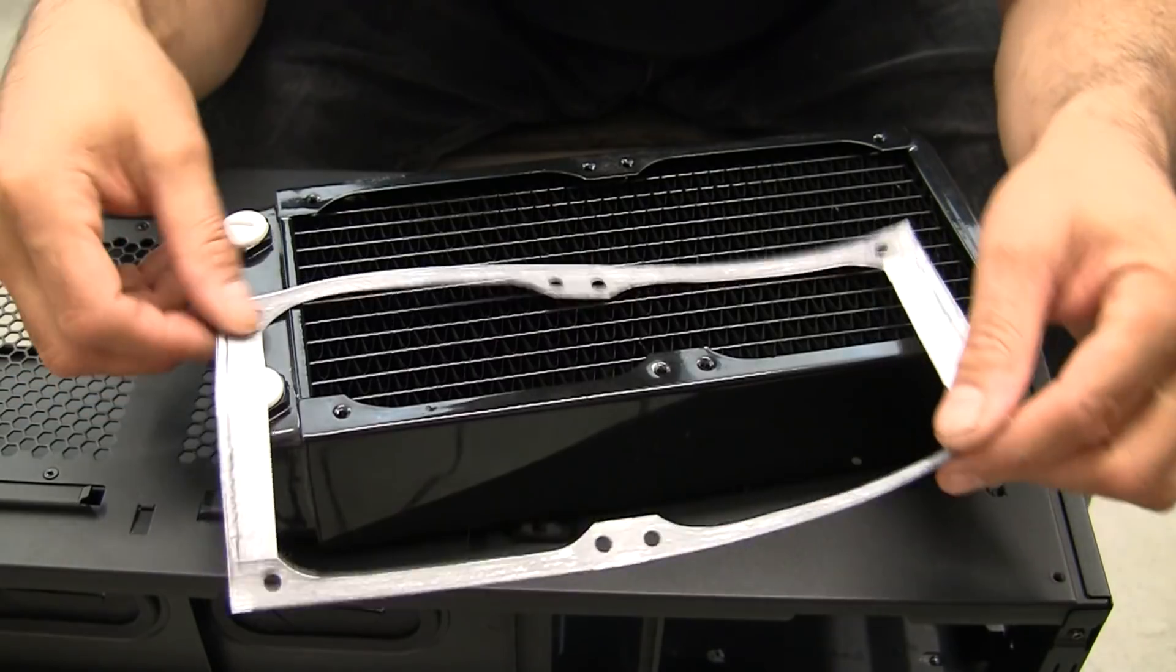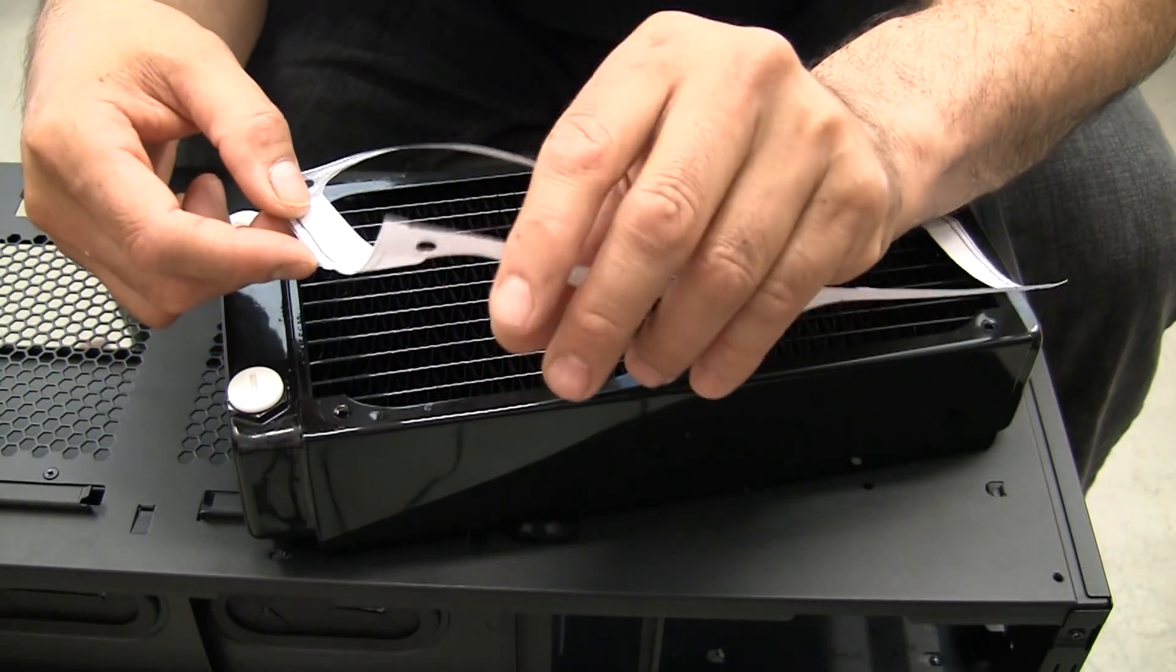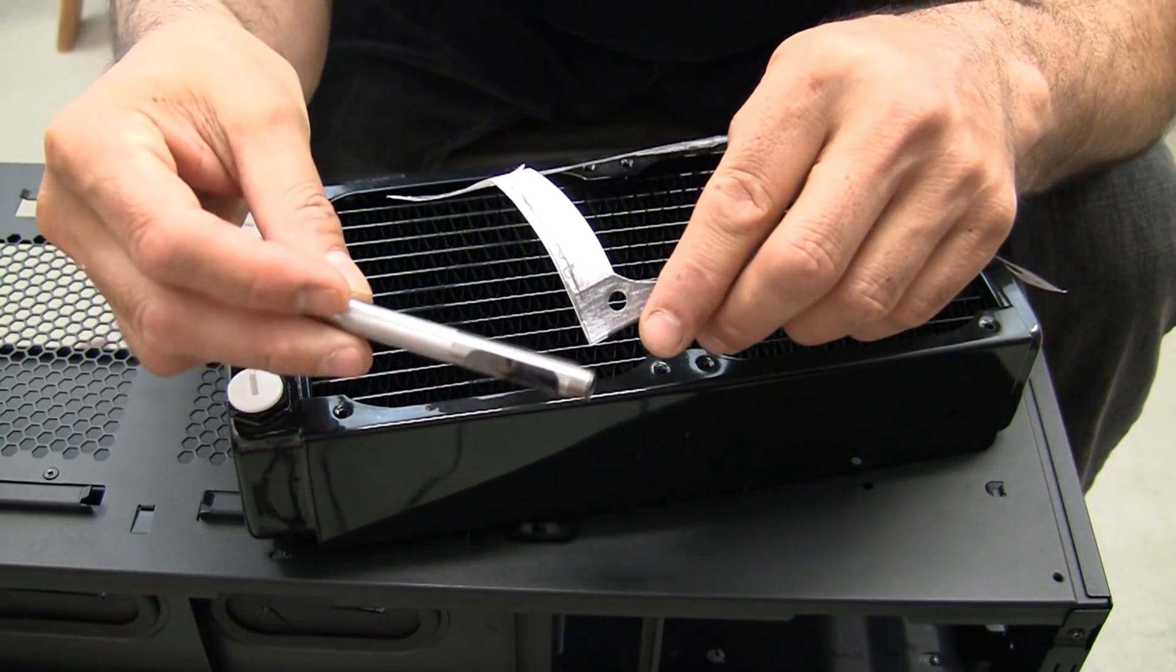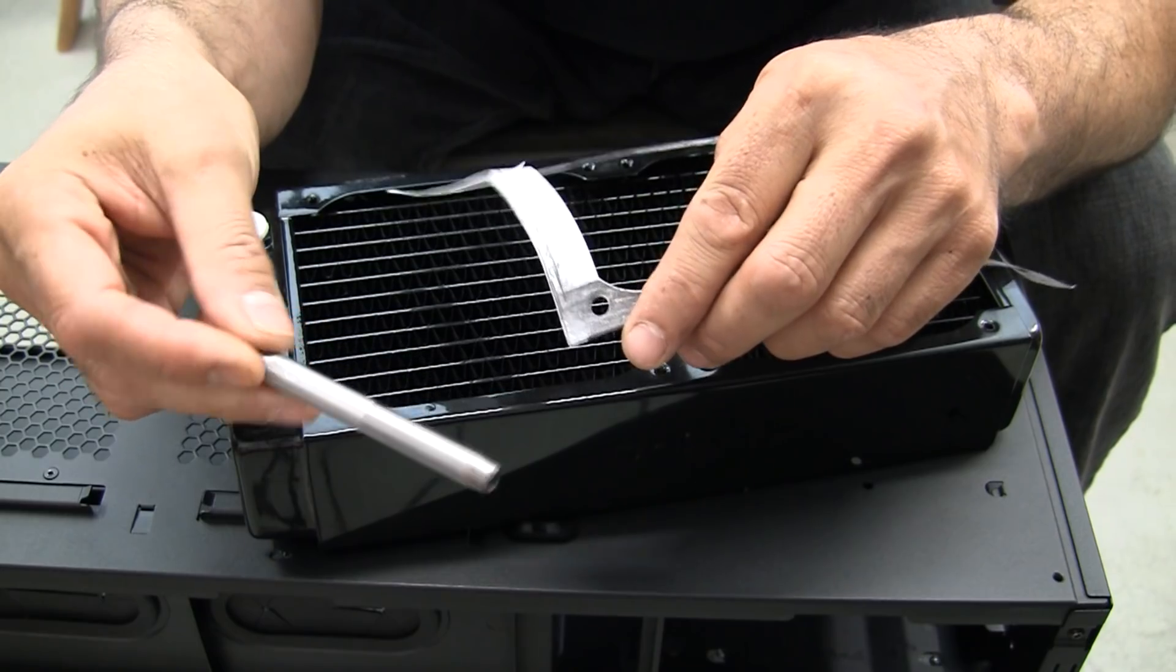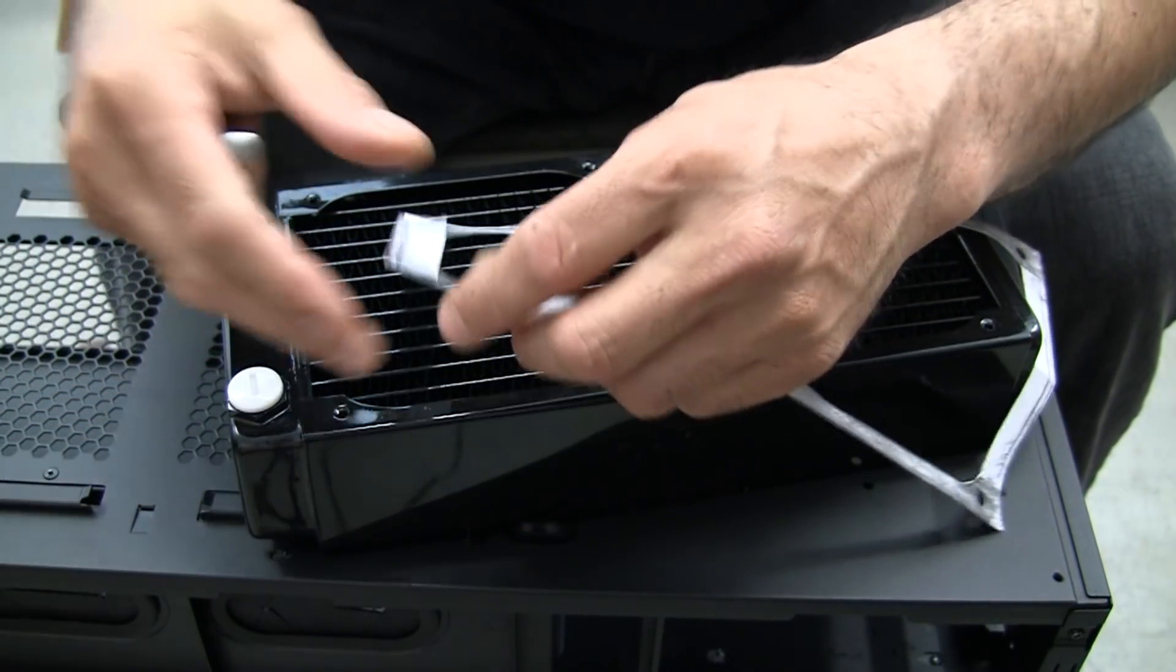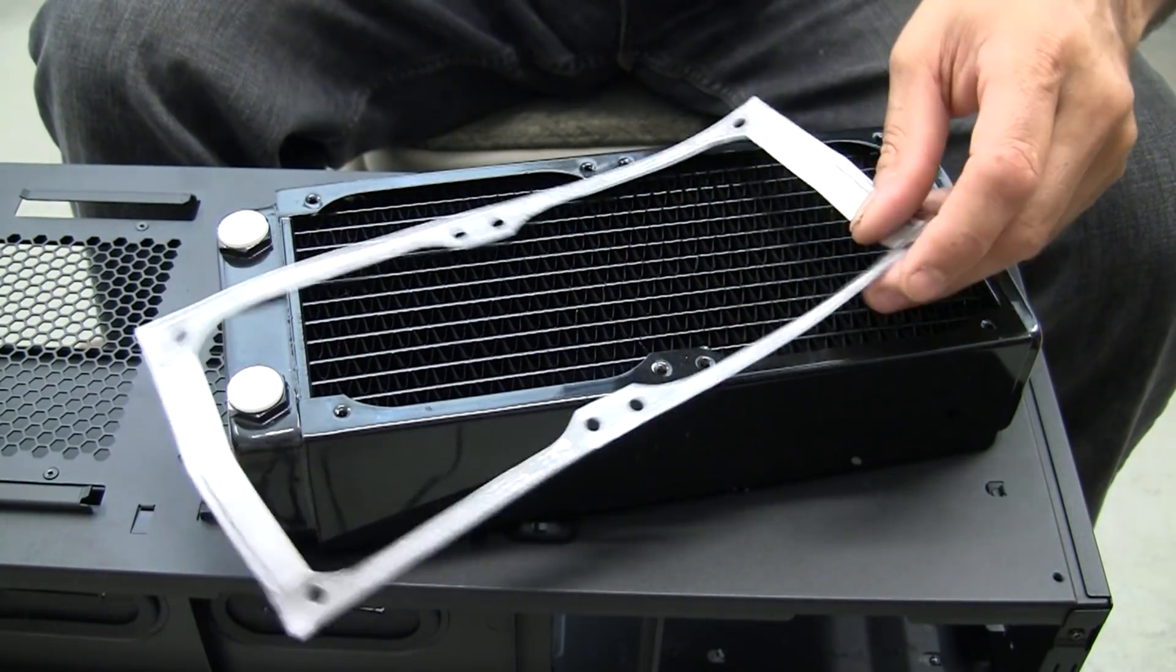Then what you'll end up with is something like this. What I did here just to make these holes is I took a regular quarter inch punch, you can use 3/16 or quarter inch, and just punch those holes out.